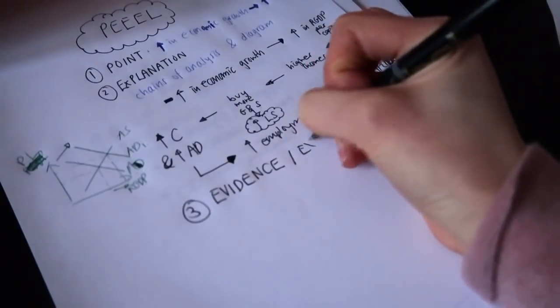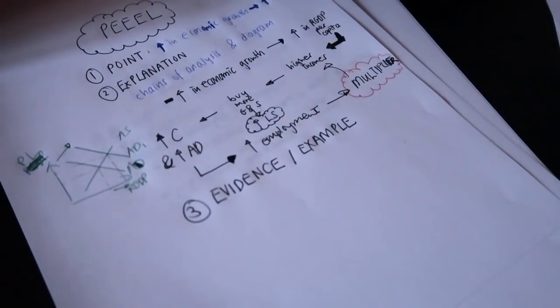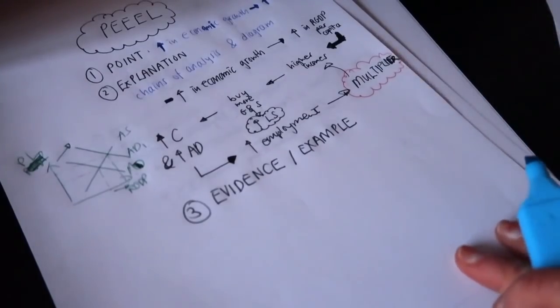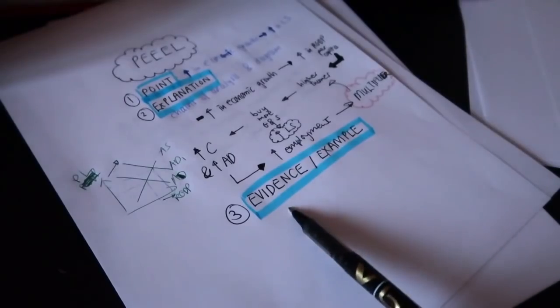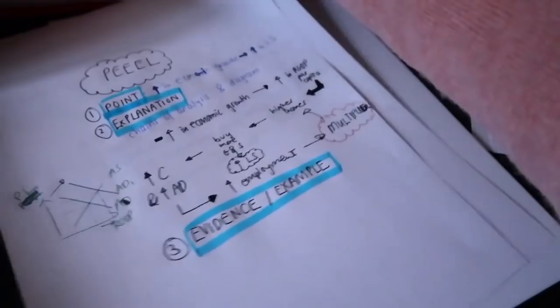The next E stands for Evidence or Example. You're trying to use an evidence or example to support your explanation, which comes from wider reading — watching the news, reading the news, noting down interesting examples to use in your essays. If you can't think of any examples and you have a data response question, just pick an example from the article they give you and use that. Whether it's from the extract or your own knowledge, use it here to support your explanation.